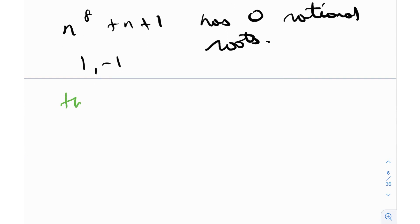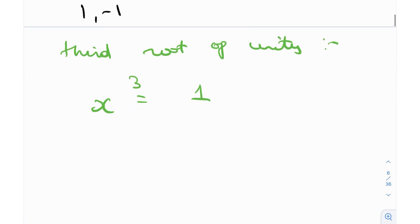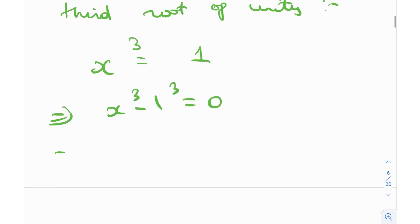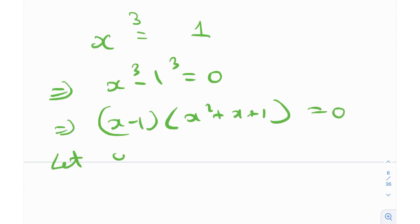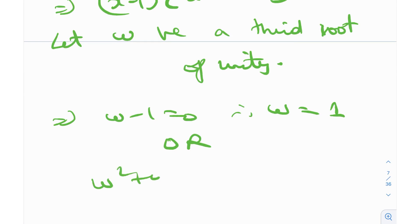For example, if I say third root of unity — what does that mean? That means I need to find a number x such that x cubed equals 1. Unity is 1, obviously, and the third root of unity will be the cube root of 1, or in other words, x^3 = 1. This is a cubic equation, so it will have three roots. I can bring one to the other side and factorize: x^3 - 1 = (x - 1)(x^2 + x + 1) = 0. Let omega be a third root of unity. That implies either omega = 1, or omega^2 + omega + 1 = 0.